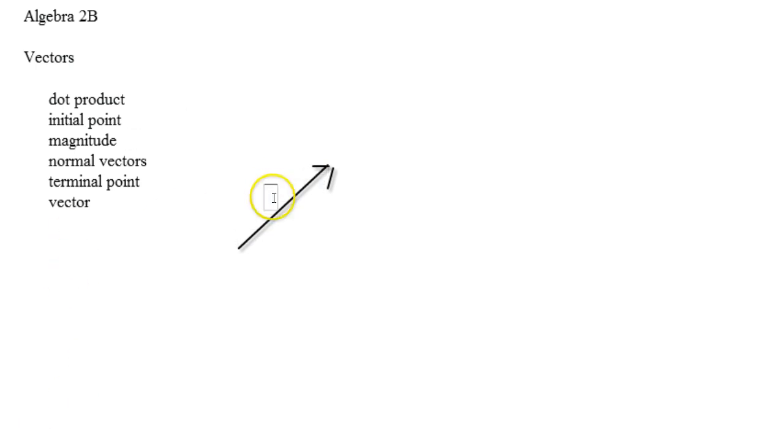Now if we call this vector V, and we want to represent its magnitude, you would either say 'the magnitude of vector V' or just use the absolute value notation.